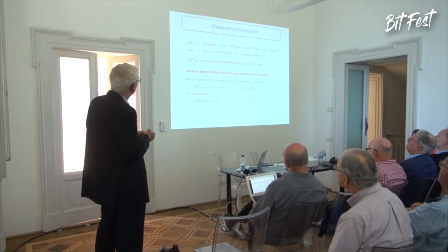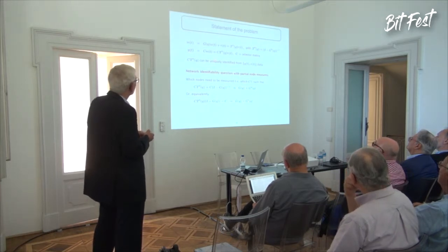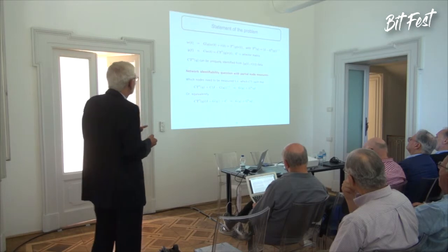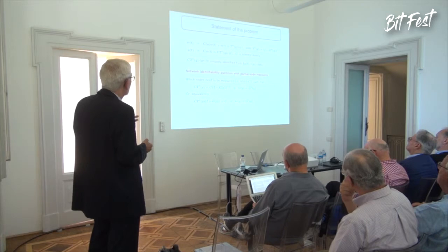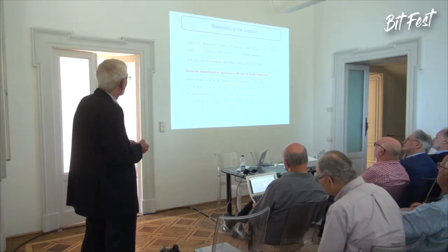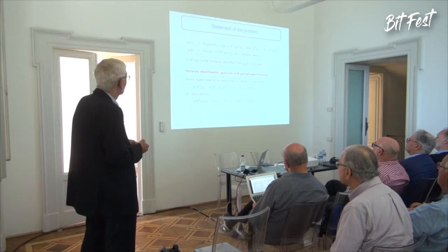The model is w = G(q)w + excitation, which can be written as w = T·r with T = (1−G)^{-1}, and then we have the measurement equation y = Cw. We know that CT₀ can be uniquely identified from y and r data. So the network identifiability question with partial node measurements is: which nodes do I need to measure — that is, which C — such that by knowing CT₀ = C(1−G)^{-1} I can uniquely recover G?